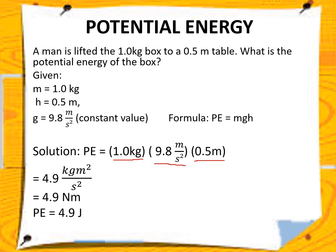Combining the units gives kilogram meter squared per second squared. This becomes meter squared because there are two meters in the expression. Alternatively, you can rewrite this as 4.9 newton meters, or 4.9 joules. So either kilogram meter squared per second squared, newton meter, or joules — all are accepted.